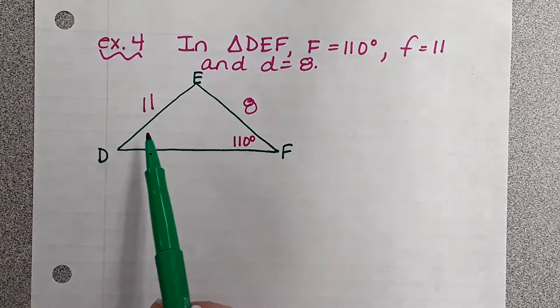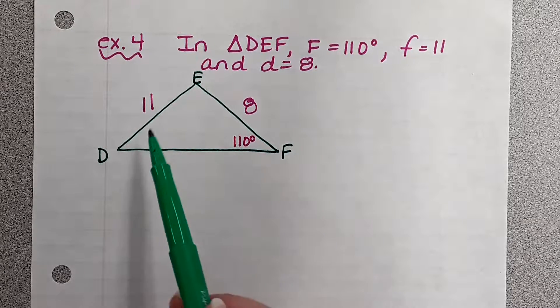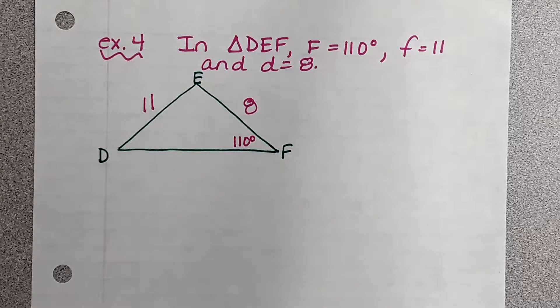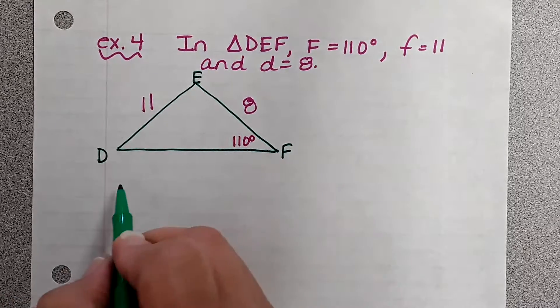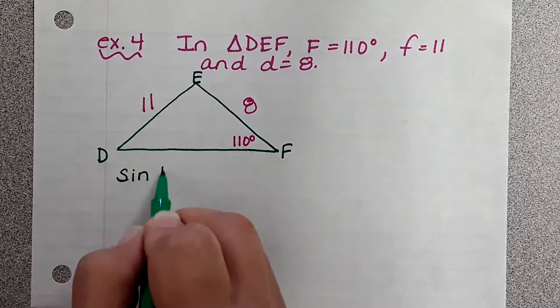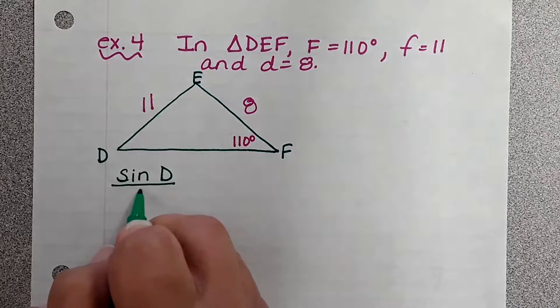So in order to find, we need to find angle D. Well, we don't know angle E, so we're going to have to use our law of sines. I know I'm looking for angle D and they gave me lowercase d, which is eight.